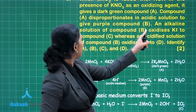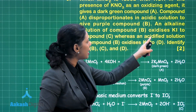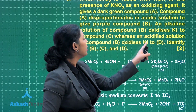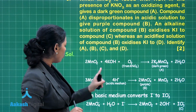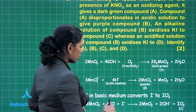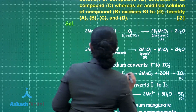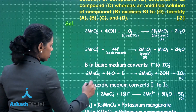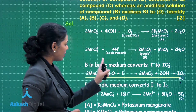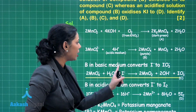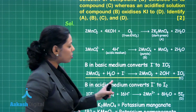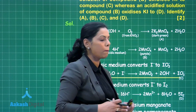An alkaline solution of compound B oxidizes KI to compound C, whereas an acidified solution oxidizes KI to compound D. In the first case, MnO₄⁻ in basic medium converts iodide ion to IO₃⁻. The chemical reaction shows MnO₄⁻ reacting with iodide ion in aqueous basic solution to give MnO₂ and IO₃⁻ ions. Therefore compound C is potassium iodate (KIO₃).